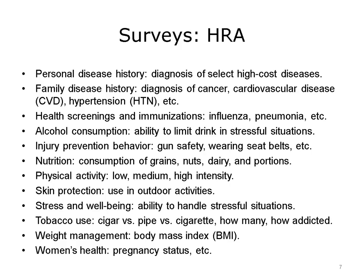Health Risk Assessment (HRA) surveys cover various topics, including Personal Disease History, which may help define diagnosis of select high-cost diseases; Family Disease History, which may reveal diagnosis of cancer, cardiovascular disease, hypertension, and other diseases that have a familial risk factor; Health Screenings and immunizations, which typically covers immunization for influenza, pneumonia, and other high-impact diseases, especially for the elderly population; Alcohol Consumption, and more specifically, the ability to limit drinking in stressful situations; and Injury Prevention Behavior, such as gun safety, wearing seat belts, and other injury-prevention behaviors.